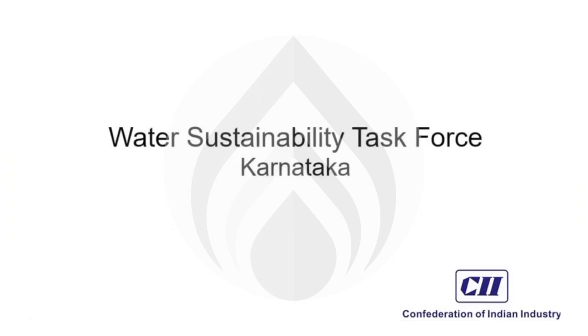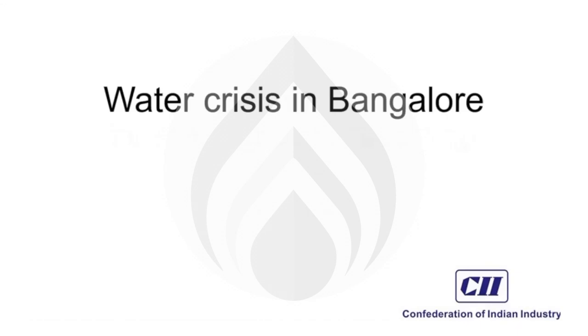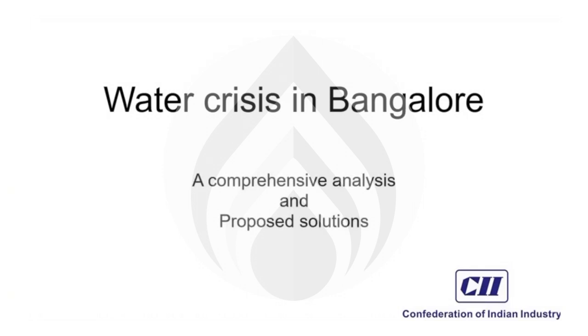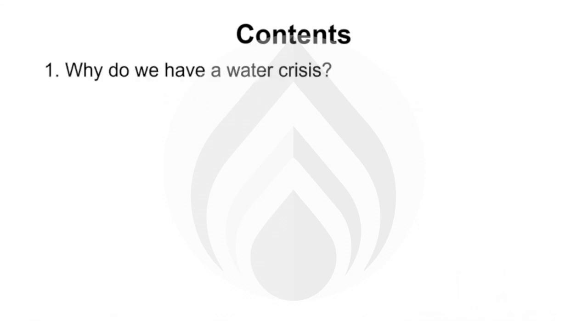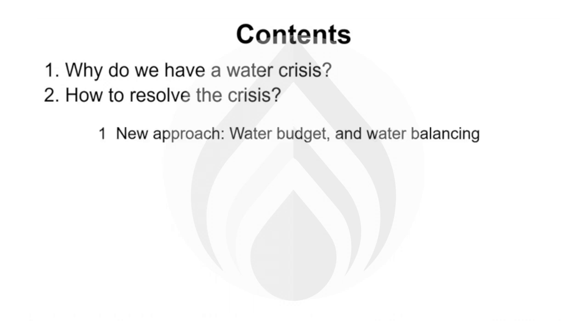We will see a proposed framework for lake rejuvenation and management, in which sweeping reforms are suggested. In this presentation, we will cover why we have a water crisis and how to resolve it. We will consider four aspects of the solution: a new approach in water budgeting and water balancing; engineering efforts required in implementation; changes required in government organization; and a new workflow for lake system management.